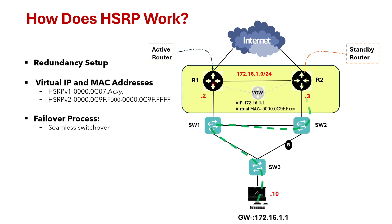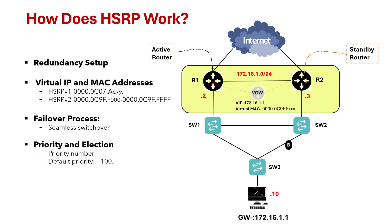When you configure HSRP you want to decide which router will be the active router. This is done using priority. Each router in the HSRP group has a priority number. The router with the highest priority becomes the active router. By default the priority is set to 100, and if two routers have the same priority, the one with the highest IP address becomes the active router.